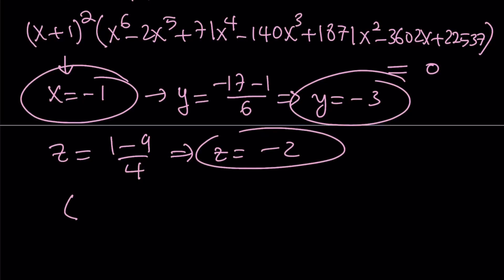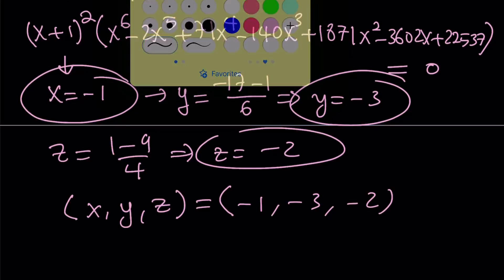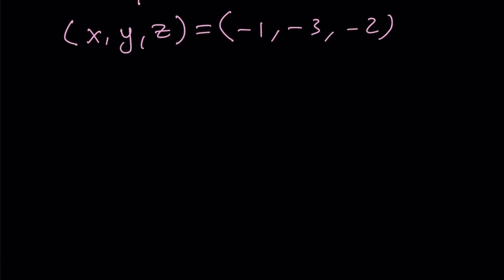So we basically get the ordered triple (x, y, z) as (negative 1, negative 3, negative 2). Obviously, they're not interchangeable because the equations are not symmetric. Great. Let's go ahead and talk about the second method now and see what that looks like.